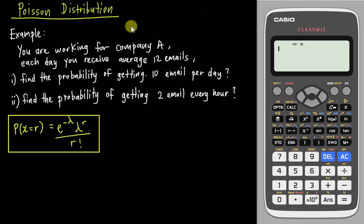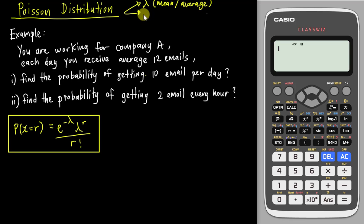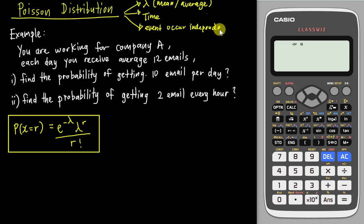Before I start, you need to know the difference between Poisson distribution and binomial distribution. For binomial distribution we involve the probability of success and failure, which is the p and q value. For Poisson distribution we don't have p or q — we have a value called lambda, which is the mean or average. Poisson distribution always involves time, because we use time to measure the mean. Also, the events must occur independently, meaning an event at one hour does not affect the next hour.